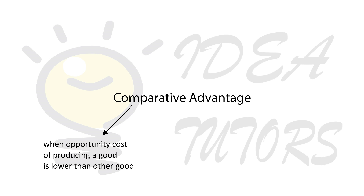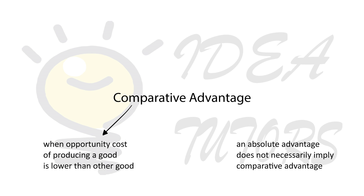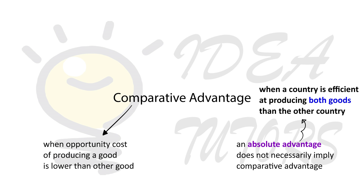A country has comparative advantage in producing a certain good if the opportunity cost of producing that good is lower than the opportunity cost in the other country. Ricardo observes that an absolute advantage does not necessarily imply a comparative advantage. By definition, a country has absolute advantage over another if it is more efficient at producing both goods than the other country.